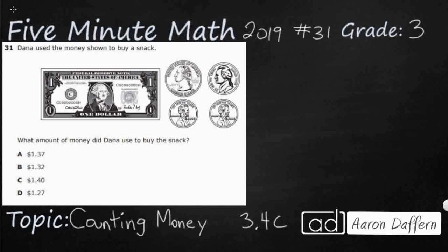So we have a pretty simple money problem. We have Dana using the money shown to buy a snack, and then we just need to identify the amount of money that Dana spent on the snack.